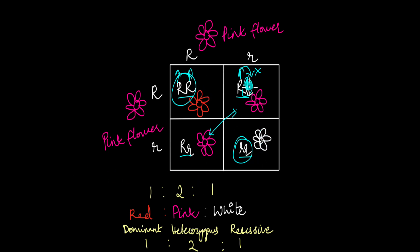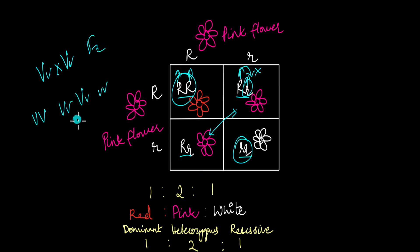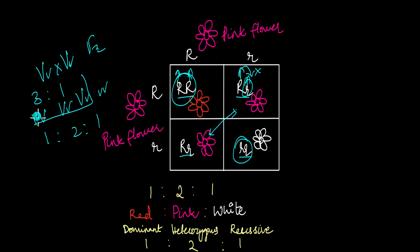If you observe the ratio of this offspring, we are somewhat getting Mendel's laws of inheritance. When Mendel crossed two heterozygous plants in his F2 generation, he also observed this same genotypic ratio of 1:2:1, but the phenotypic ratio was still 3:1 because the trait was completely dominant. But in this case, both the genotypic and the phenotypic ratio is 1:2:1.